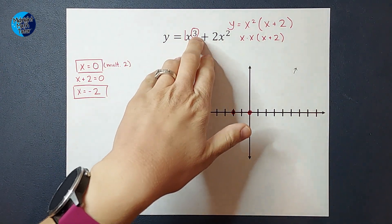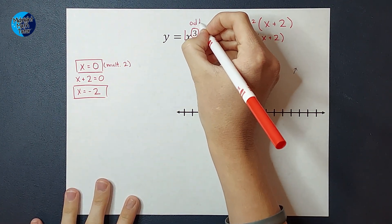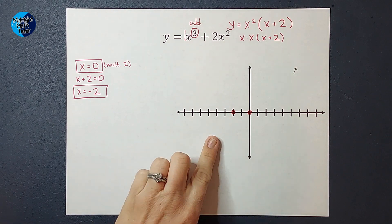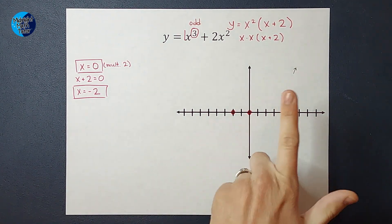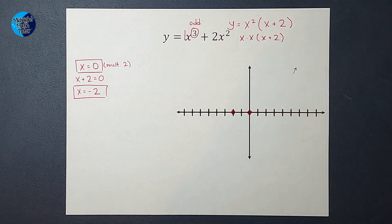So it's odd. If my exponent is odd, the left side of my graph is going to do the opposite of the right side of my graph. If it were even, it would do the same thing.